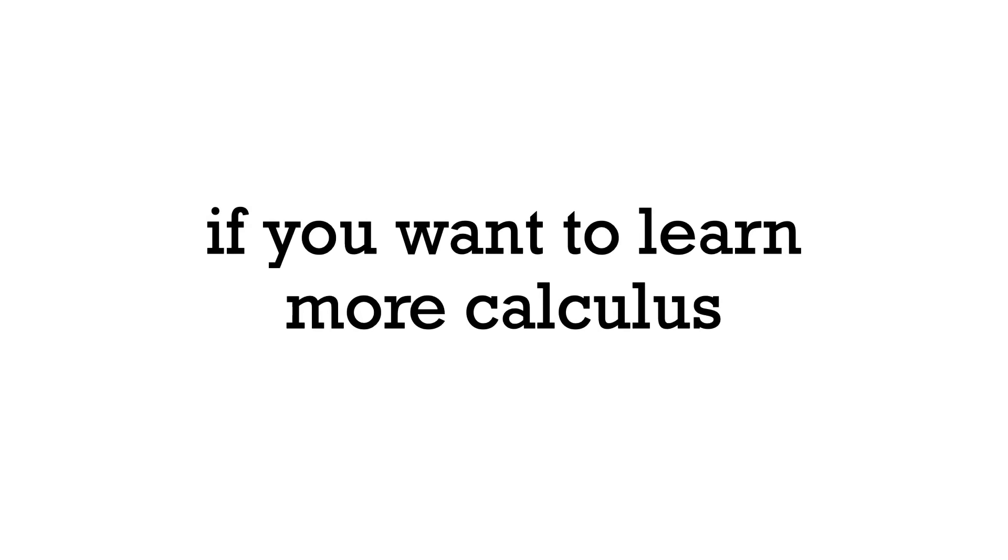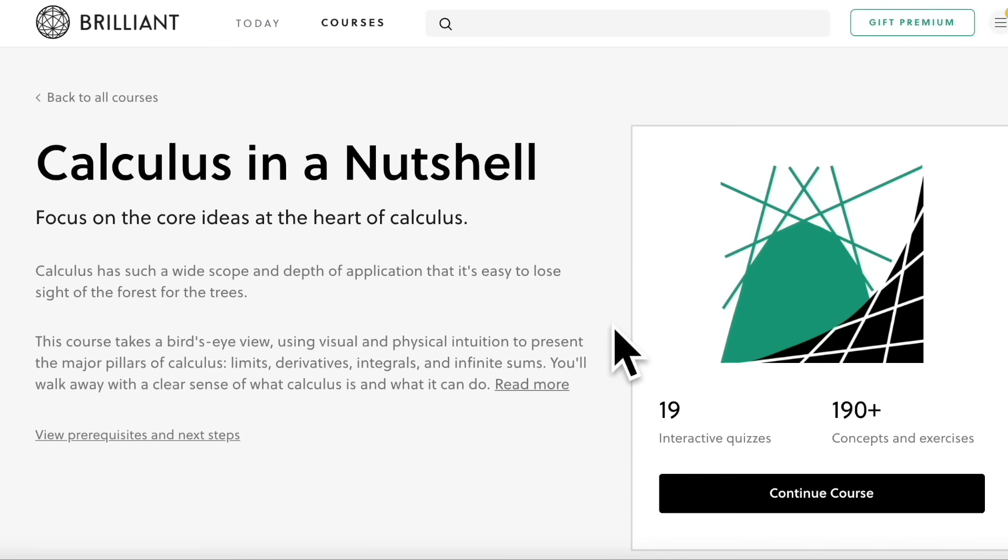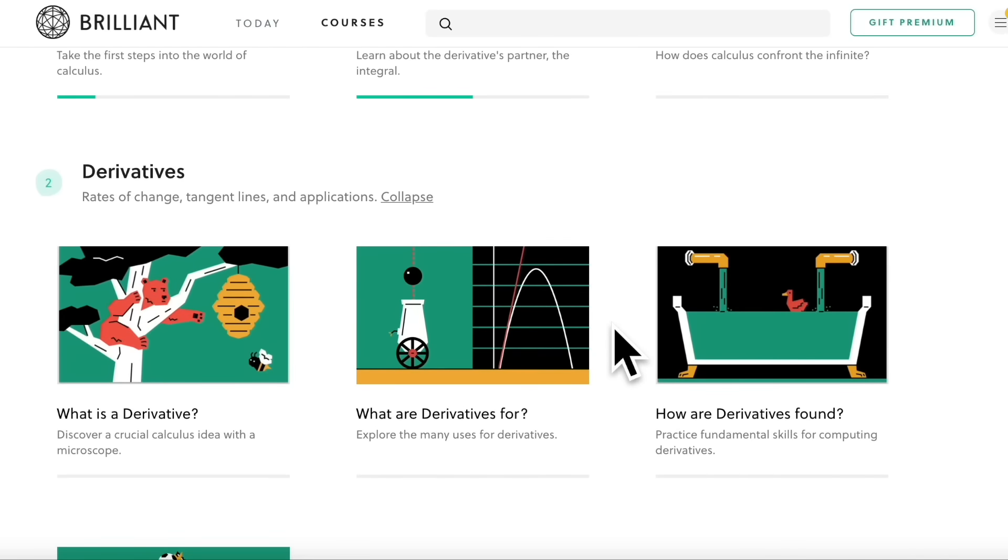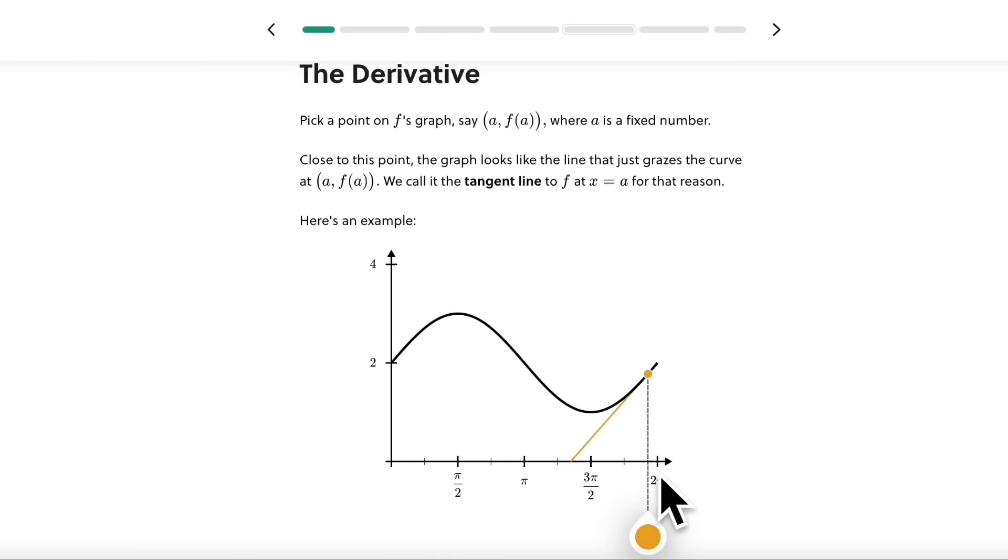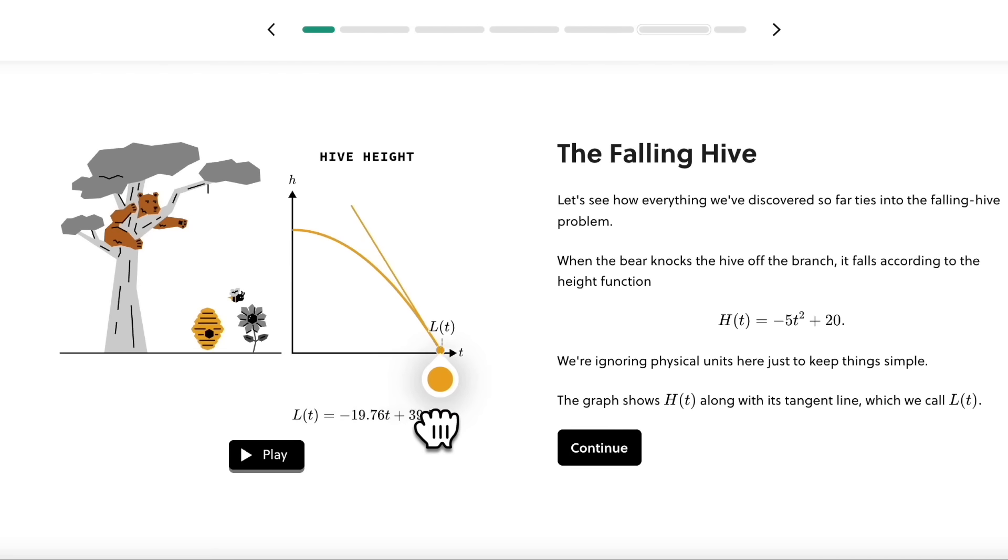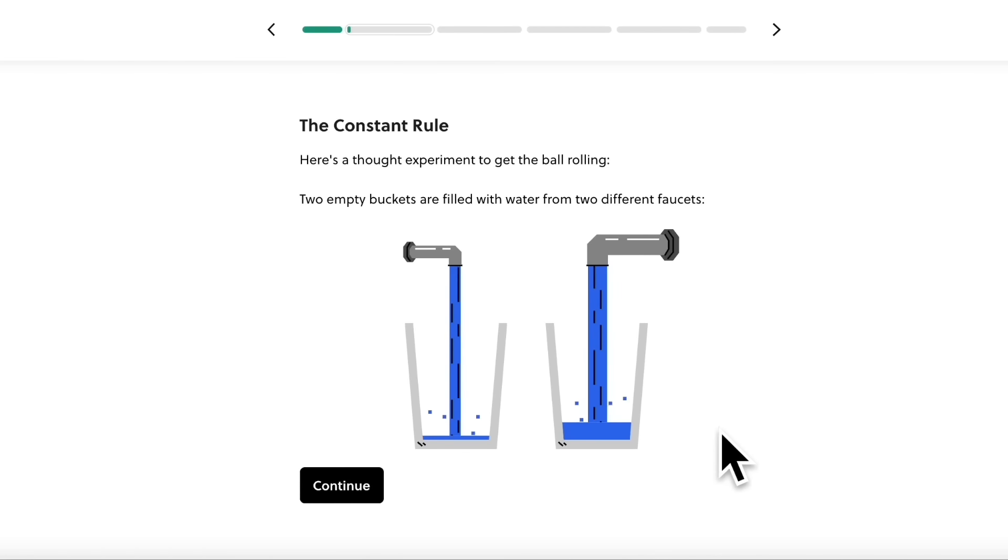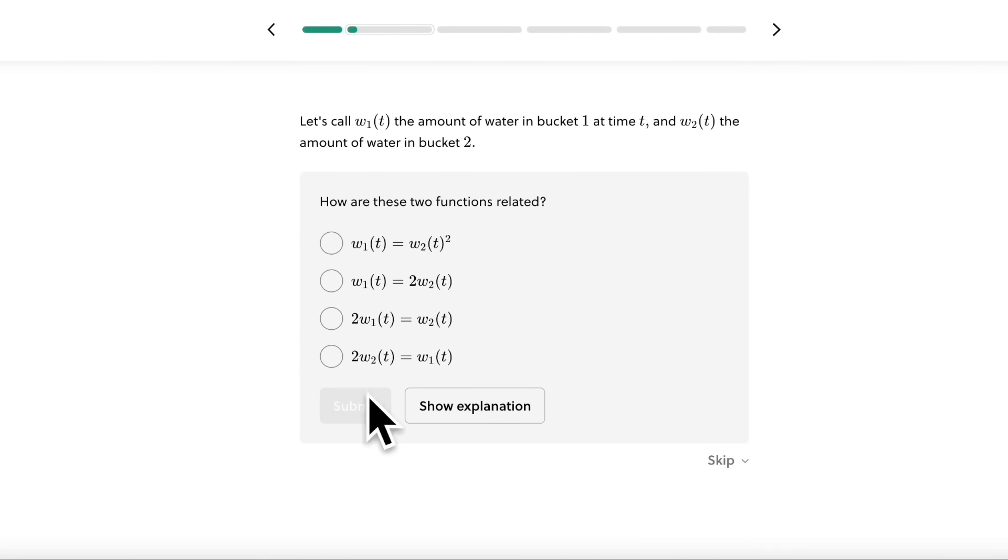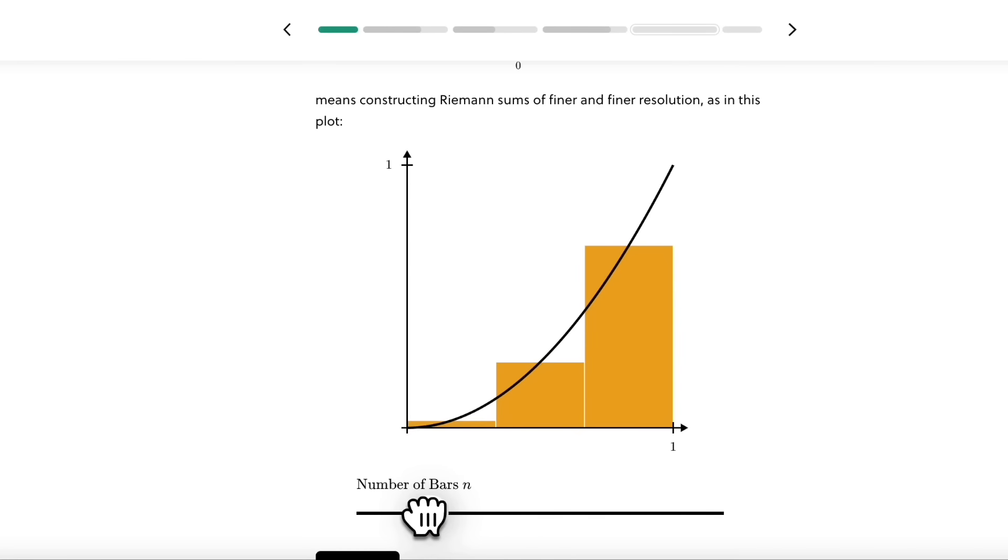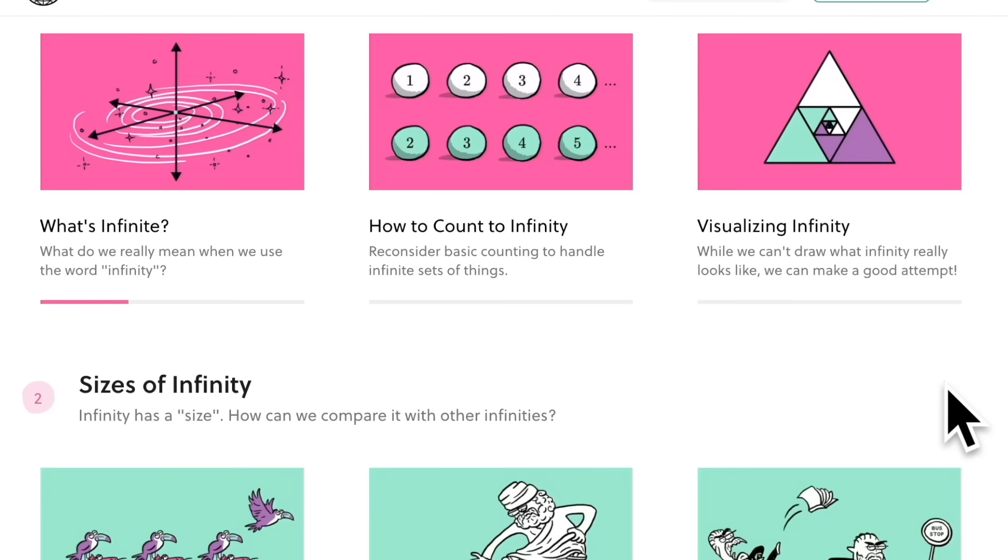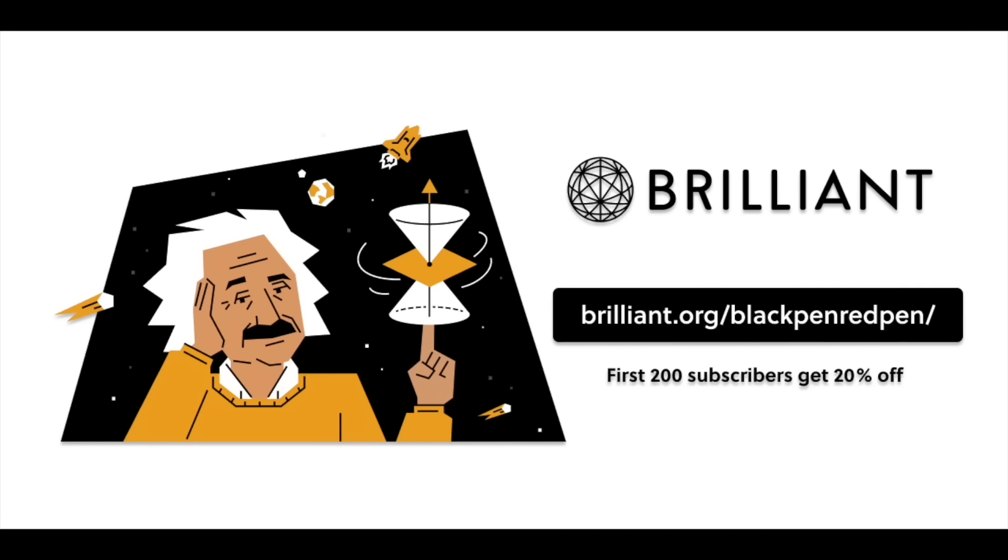If you want to learn more calculus, then one good place for you to start is our sponsor today, Brilliant. It is an excellent online learning platform with a big focus on interactive learning. As we can see, this is from their Calculus in a Nutshell course. This course uses visual and physical intuition to present the major topics of calculus, namely limits, derivatives, integrals, and infinite series. You will walk away with a clear sense of what calculus is and what it can do. Taking a course from Brilliant is really fun because they will always keep you engaged by storytelling and beautiful animations. Besides calculus, they also have other courses in math, science, and computer science. Use the link in the description, brilliant.org/blackpenredpen, because that way you can get a 20% off discount. I want to thank Brilliant for sponsoring this video and thank you guys for checking them out.